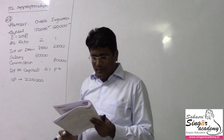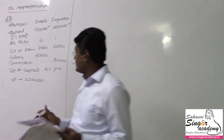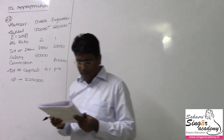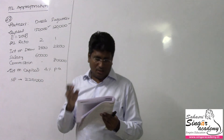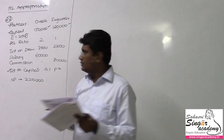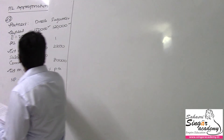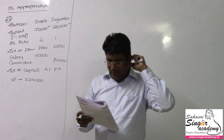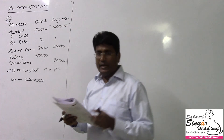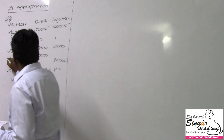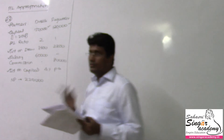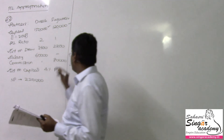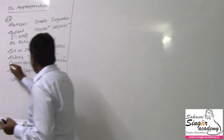Partners are entitled to interest on capital at 4% per annum. Interest on drawings to be charged: Dinesh 3,600 and Sugumar 2,200. Dinesh to receive a salary of 60,000 for the year. And Sugumar to receive a commission of 80,000 for the entire year.